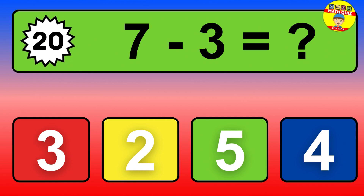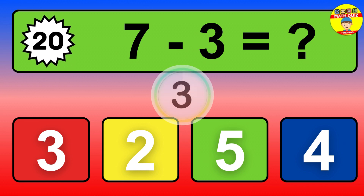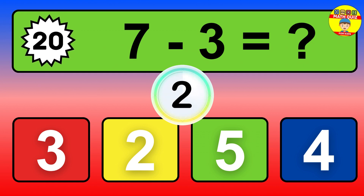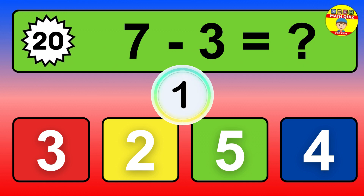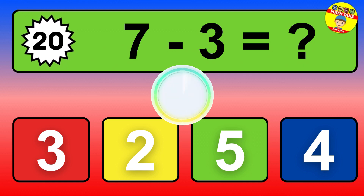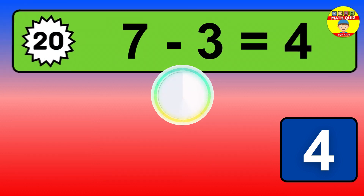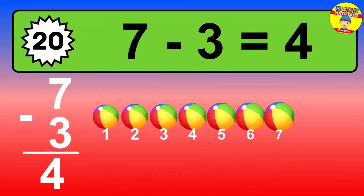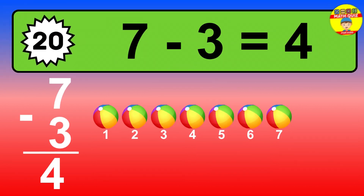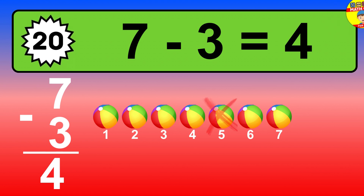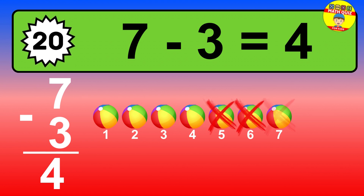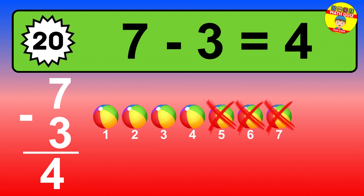Question 20. 7 minus 3 equals what? So the answer is 7 minus 3 is 4. Let's count it. 1, 2, 3, 4.